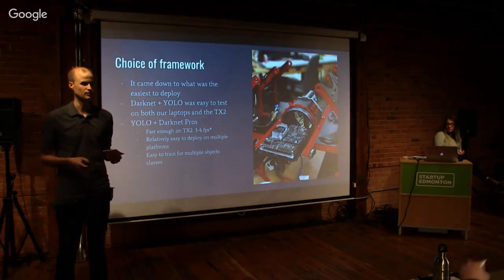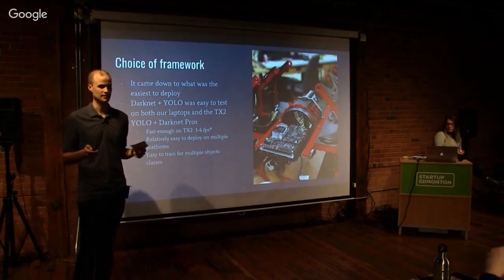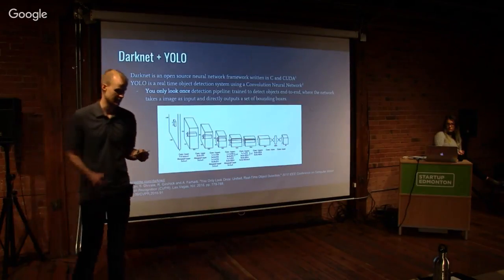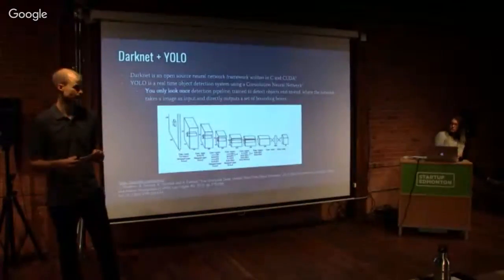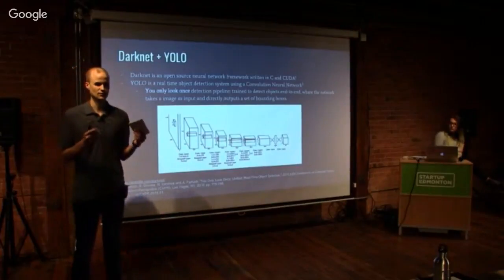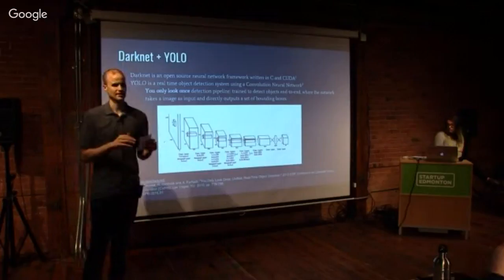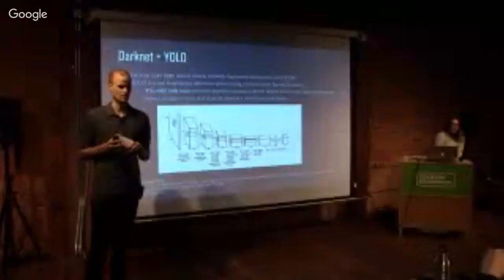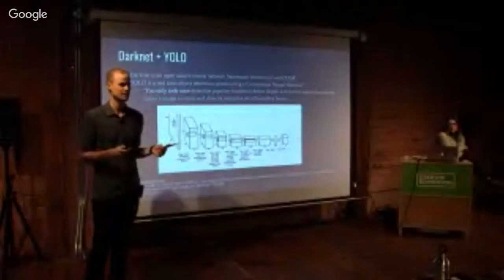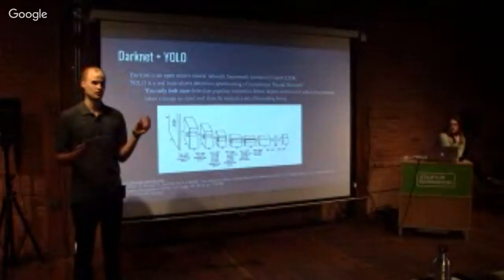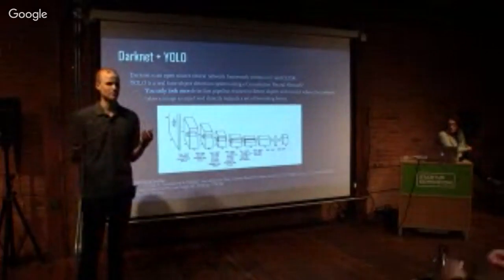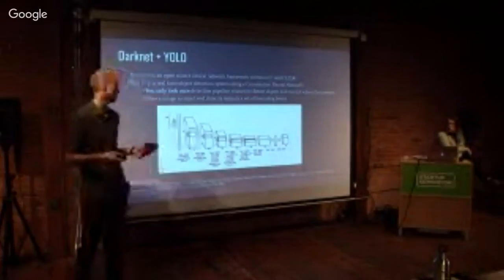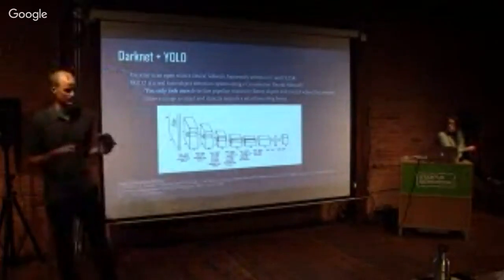In YOLO's paper they showed it could be trained with 9,000 object classes. Darknet is an open-source neural network library written in C and CUDA. YOLO stands for You Only Look Once — it's a real-time object detection system. The reason it's called that is it takes an image and directly outputs bounding boxes in a single pass. Compared to previous methods using sliding windows or region proposal networks that apply the same network many times over an image, YOLO does it once, making it much faster.